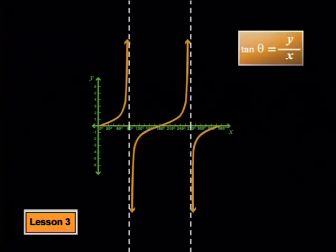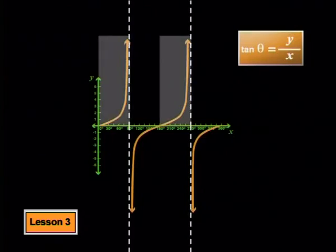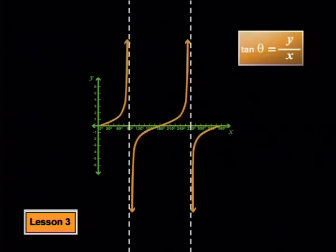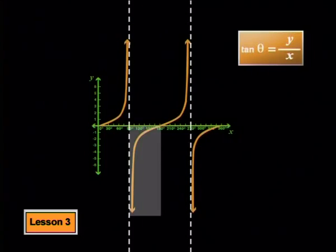So we can say that the graph increases to infinity as the x value approaches 90 degrees and 270 degrees over here and here, and it increases from negative infinity as the x value moves away from the asymptotes over here and here.